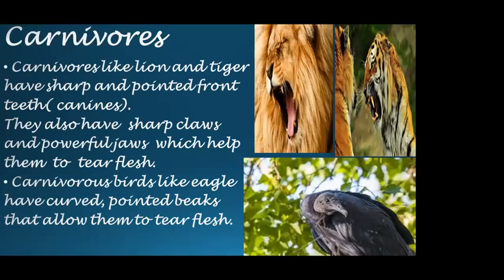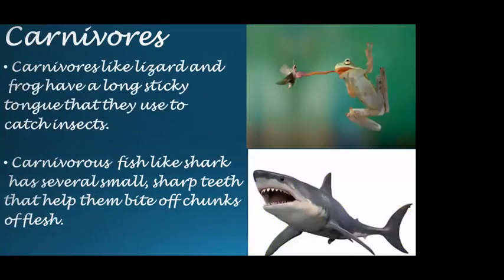Frogs and lizards use their long tongue to catch their prey. When a frog or lizard spots an insect, it sticks out its long tongue and catches the insect and engulfs it. Carnivorous fish like sharks have several small sharp teeth that help them bite off chunks of flesh.